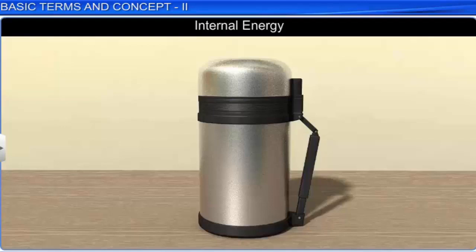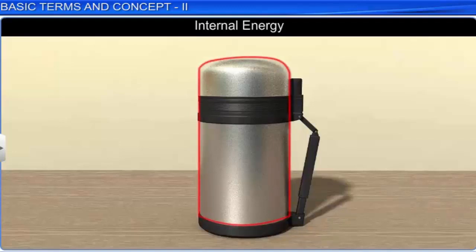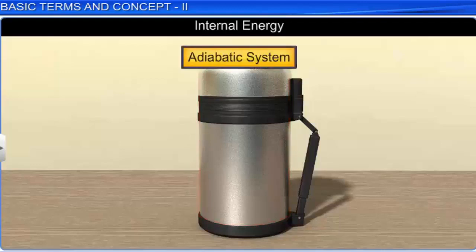Let us take a certain amount of water in a thermos flask, or an insulated vessel that does not allow heat exchange with the surroundings. Such a system is called adiabatic. The state of such a system changes without an exchange of heat, and thus the process is called an adiabatic process. In other words, delta Q is equal to zero.